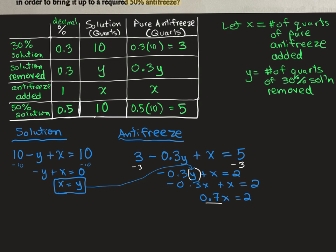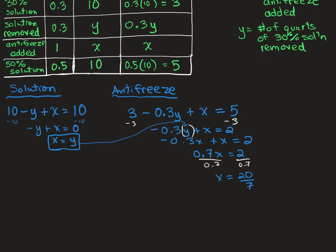Then last step, we divide both sides by 0.7 to isolate x. And we would get 20 over 7. Or if you wanted to write it as a mixed number, that would be 7 goes into 20 twice with 6 left over, so 2 and 6 sevenths quarts.